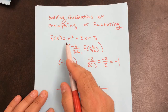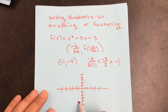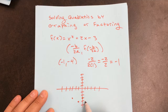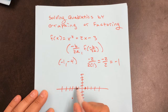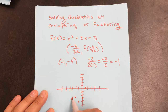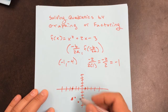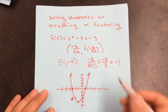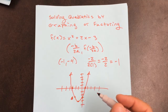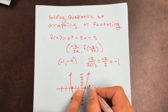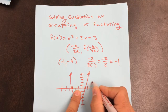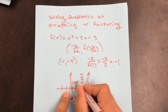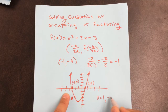Because the A value is 1, when I go over 1, I go up 1. When I go over 2, I go up 4. So my quadratic looks something like this. What we're looking for is the x-intercepts — those are our solutions when y equals 0. So we're trying to find these two points, which are 1 and negative 3. My solutions are x equals 1 or negative 3.